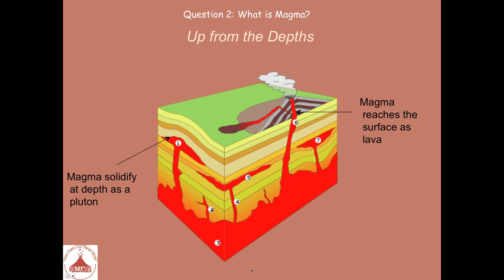Here is another figure to show you the difference between a magma kept under the surface and a magma that was able to go through the surface. Here, in number 1, a pluton is formed. In number 6, the magma reaches the surface as lava and is helping to form a new volcano.